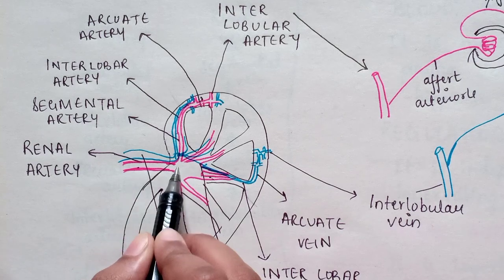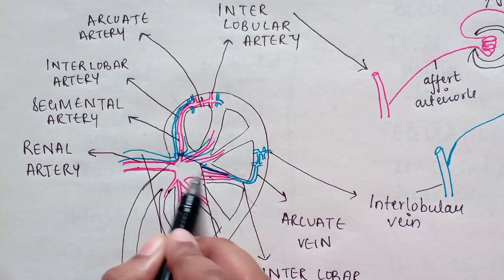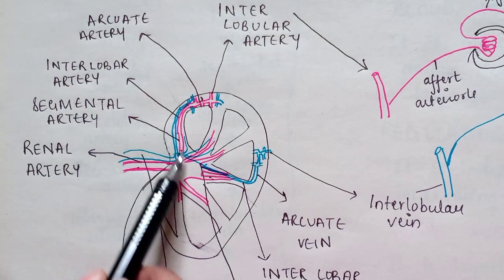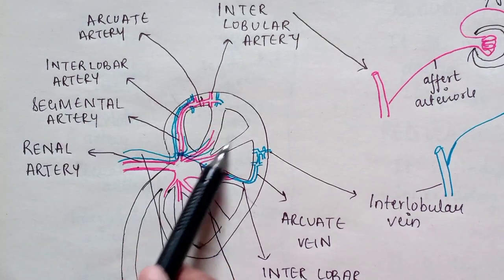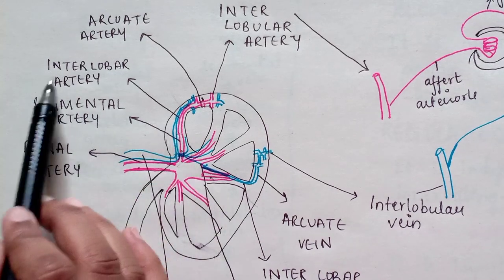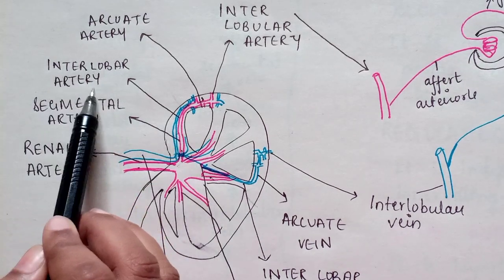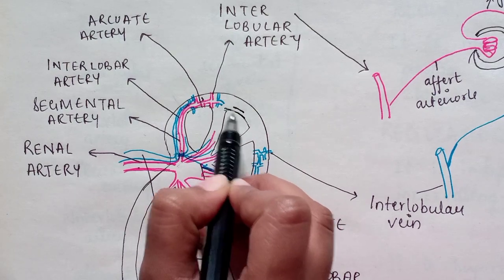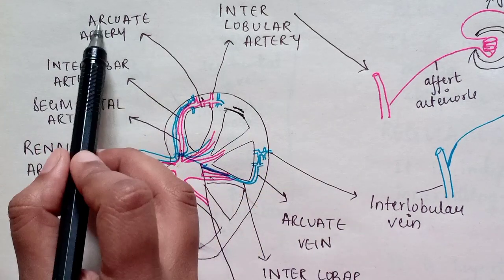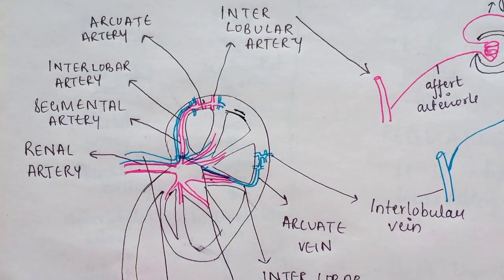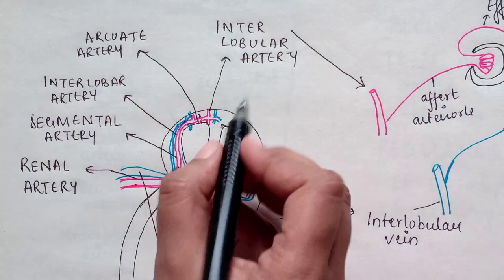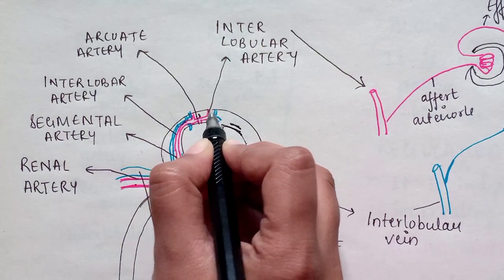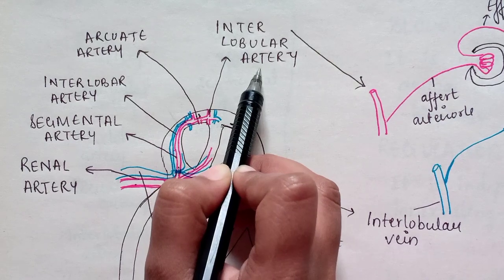The main supply to the kidney is the renal artery, which is a branch of the abdominal aorta. This renal artery is further divided into segments called the segmental artery. These segmental arteries pass in between the lobes of the kidney and are called the interlobar artery. When the interlobar arteries become parallel to the pyramids, they are called the arcuate artery. The arteries that further branch out perpendicular to these arcuate arteries are called the interlobular artery.